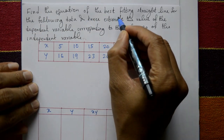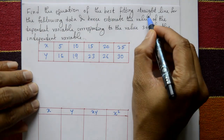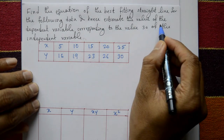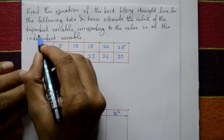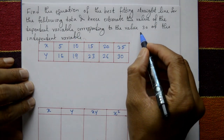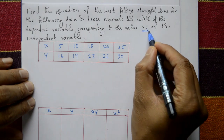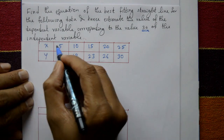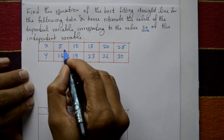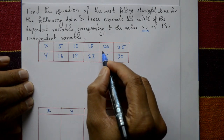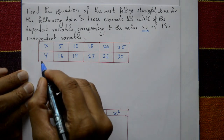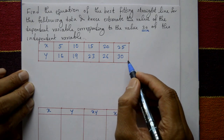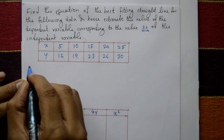Find the equation of the best fitting straight line for the following data, and hence estimate the value of the dependent variable corresponding to the independent variable value 30. X is given as 5, 10, 15, 20, 25, and Y is given as 16, 19, 23, 26, 30.